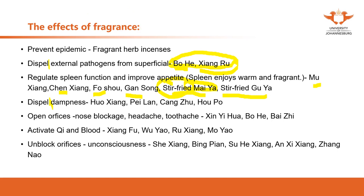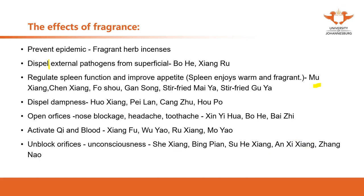As you can see, when pronouncing these different herbs, some of them have the name 'Xiang' — for example, Huo Xiang, Xiang Fu, She Xiang, Su He Xiang, An Xi Xiang. 'Xiang' in Mandarin means fragrant or fragrant-smelling. So when you see a patient with external pathogens, spleen dysfunction, poor appetite, dampness, or blockage of the orifices, you can think about fragrant herbs to help treat these conditions.